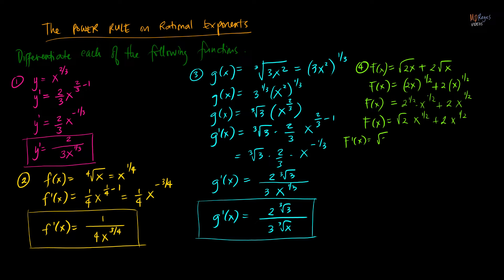In the first term, set aside square root of 2 and apply the power rule to differentiate x raised to one-half: bring down one-half, copy the base, subtract one, giving one-half x raised to one-half minus one. In the second term, copy the constant 2 and differentiate x raised to one-half using the power rule the same way. Simplifying: first term gives square root of 2 over 2 times x raised to negative one-half; second term gives 2 times one-half equals 1, times x raised to negative one-half.